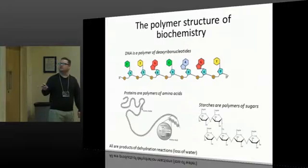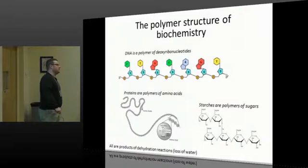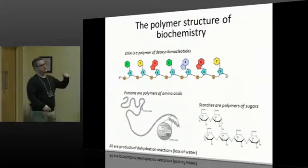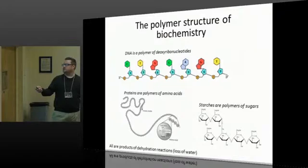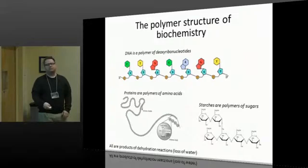DNA is a polymer of deoxyribonucleotides — all that means is that you have nucleotides attached to ribose sugars that are missing an oxygen at one position. Proteins are polymers of amino acids. We've already heard people talk about amino acids and where they could have come from. Starches are probably a later addition, but are still a biopolymer. All of these are products of dehydration reactions where the monomers lose a water and form long-chain polymers. Sounds easy — not really.